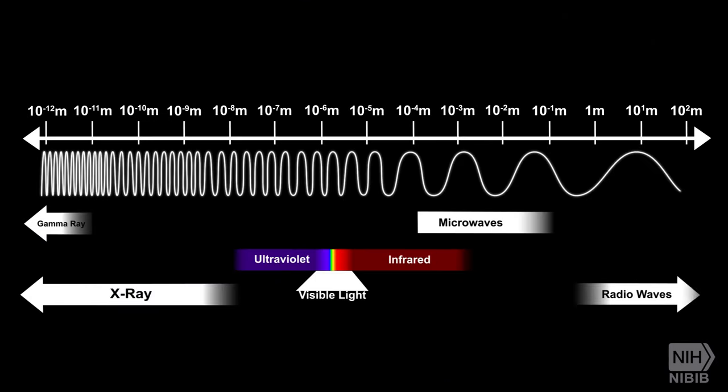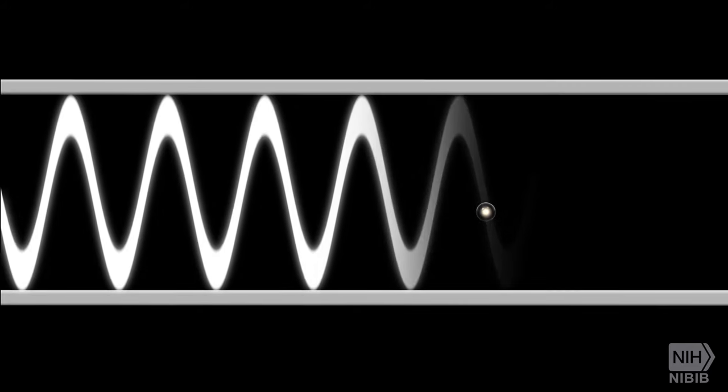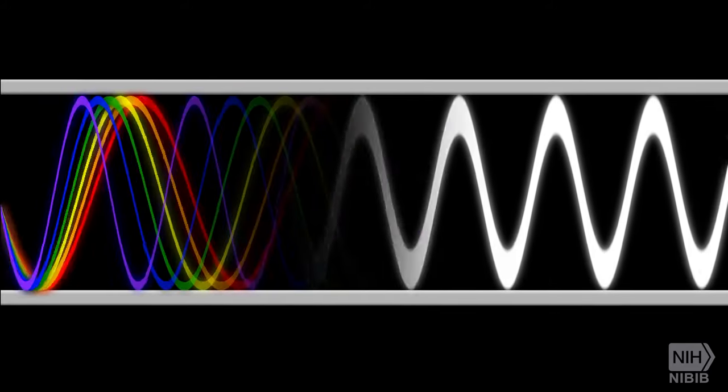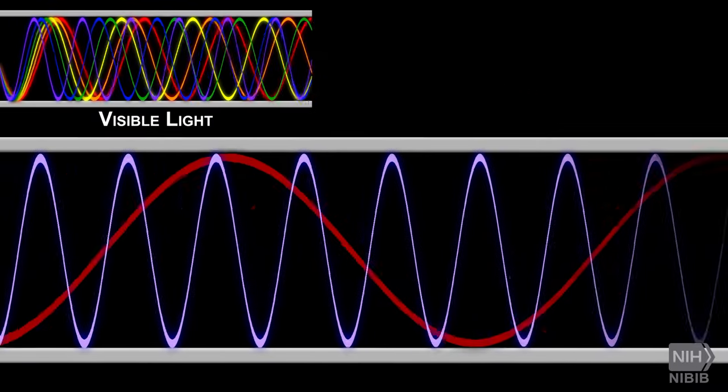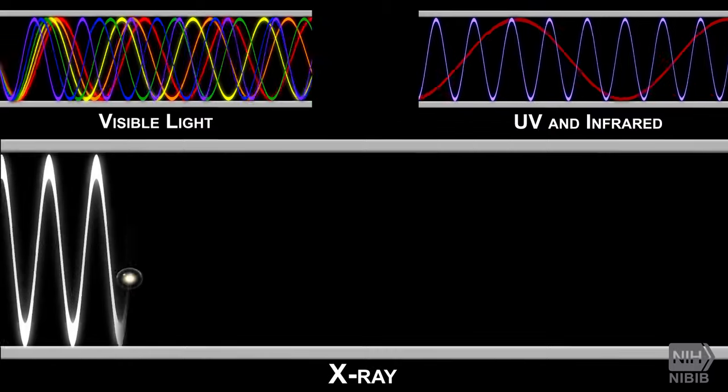Light is a form of electromagnetic radiation. At some wavelengths it appears as visible light. At others it takes the form of radiation we cannot see, such as ultraviolet, infrared, and x-rays.